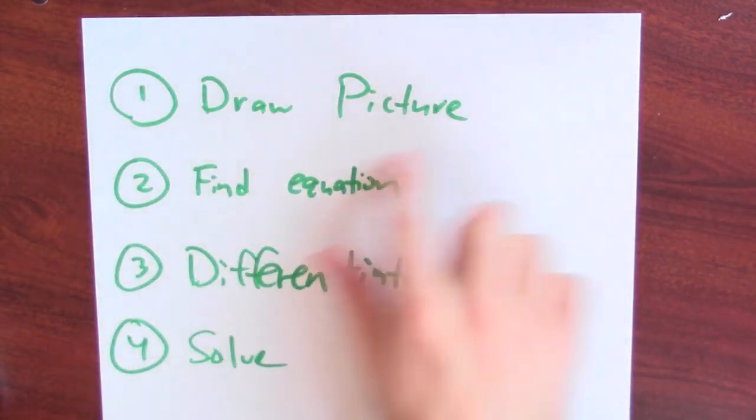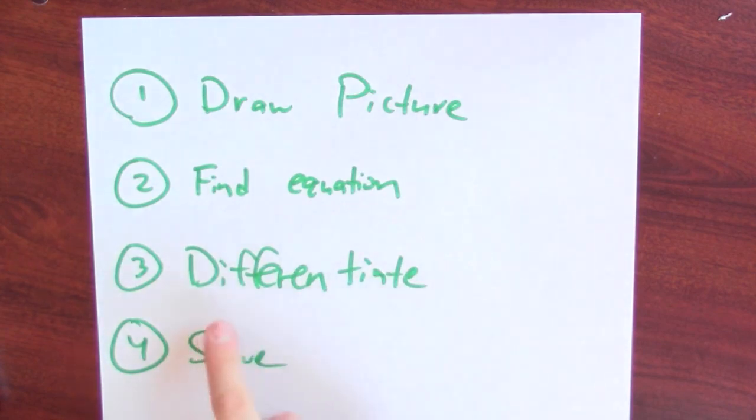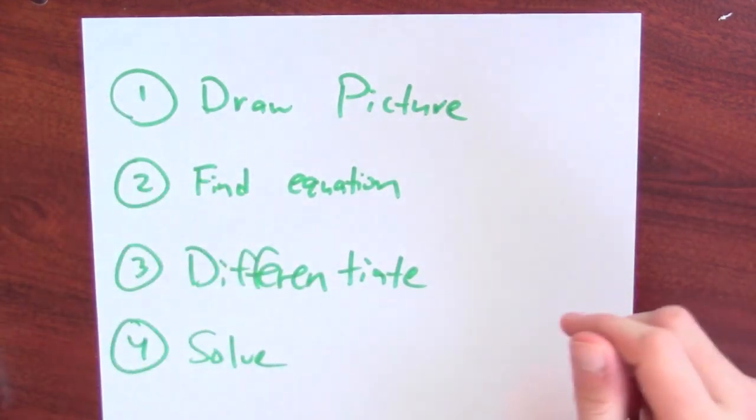You should convert it into some diagram. Step two, to find an equation, given that picture. You should label everything in the picture so you can write down some equation. Step three is to differentiate that equation, which will probably involve the chain rule.